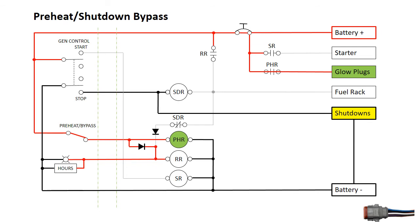The run relay control circuit powers the panel meters and the run relay coil. The run relay contacts close, energizing the ignition circuit. The ignition circuit powers the fuel rack and the shutdown relay. Because the shutdown relay is energized, the normally closed contacts are now open, and the run relay is not latched.